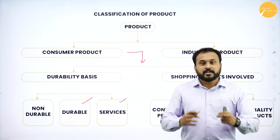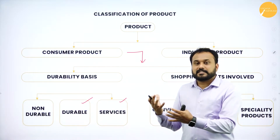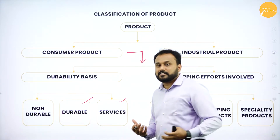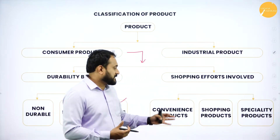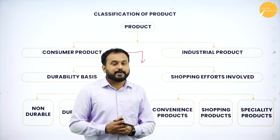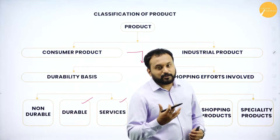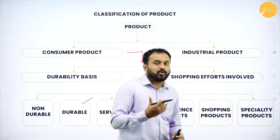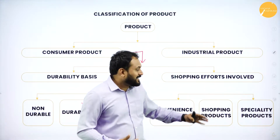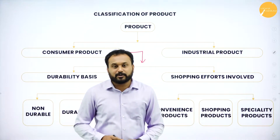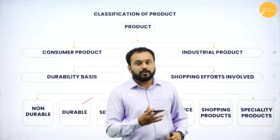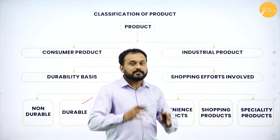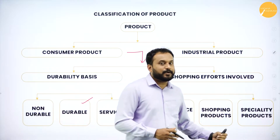A convenience product is one the customer immediately goes and buys — no deliberation needed. A shopping product involves comparison of competitors, pricing, and quality before purchasing. A specialty product is one where the customer is brand-loyal — they only go with that particular brand because of its unique features and characteristics.